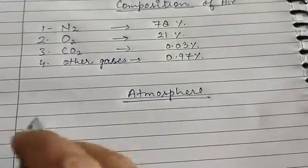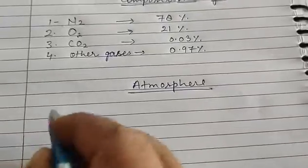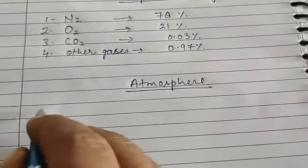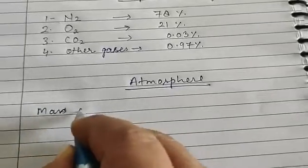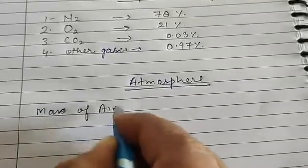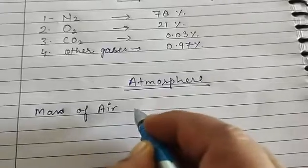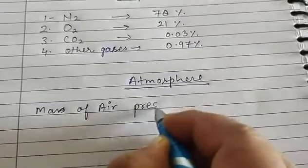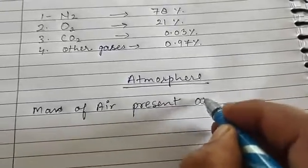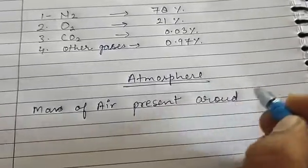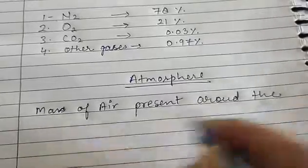What is atmosphere? The mass of air, the mass of air present around the earth surface, is called atmosphere.